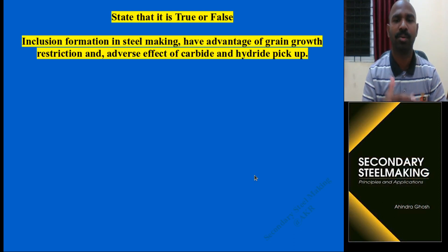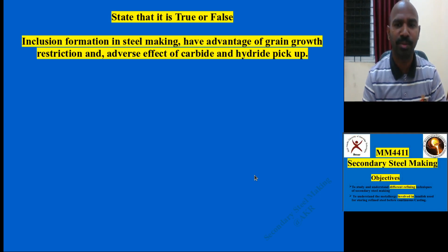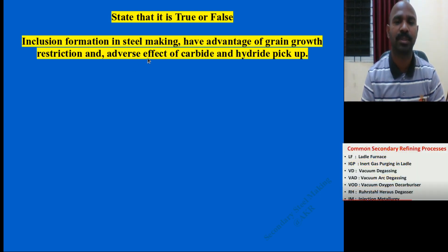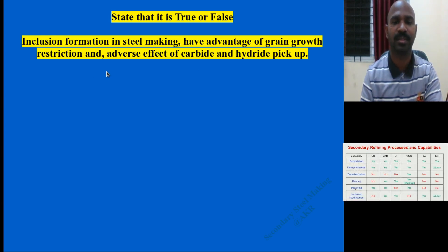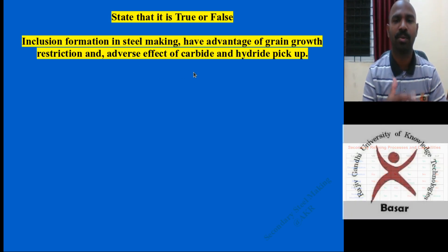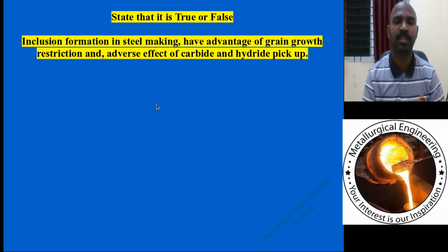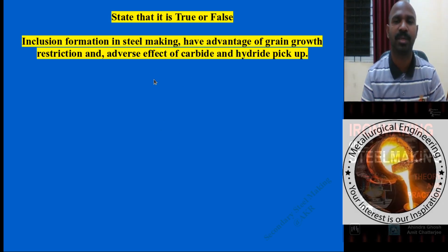After completing this topic, let me ask a simple question based on inclusion engineering: Inclusion formation in steelmaking has the advantage of grain growth restriction, such as micro-inclusion formation. But in another case, it shows an adverse effect by picking up carbides and hydrides along with inclusions, which then remain in the steel and are carried forward in billets and semi-finished goods — and these need to be removed. Please consider whether this particular statement, from this section of the topic, is true or not.